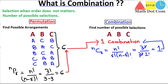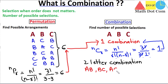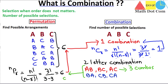If you are asked to find the two-letter combinations from the word ABC — that is, taking two letters at a time out of three — the possible selections are AB, BC, and AC. But according to permutation, we can also have BA, CB, and CA because order does matter in permutation. In combination, order does not matter, so we have only three combinations, while permutation gives six arrangements.